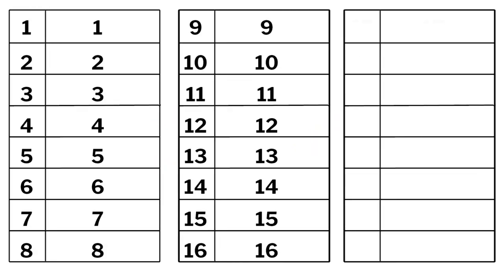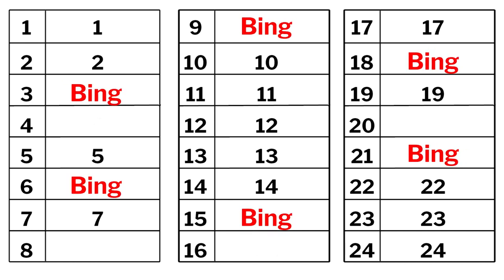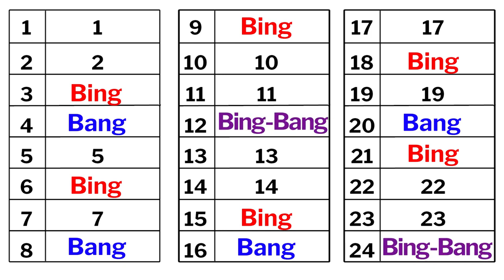The game goes as follows: we select two numbers, say 3 and 4. The children start saying the numbers, but the rule is for 3 and all multiples of 3, the children will not say the numbers. Instead, they say 'bing', and 'bang' for 4 and all multiples of 4, and 'bing bang' for multiples of both.